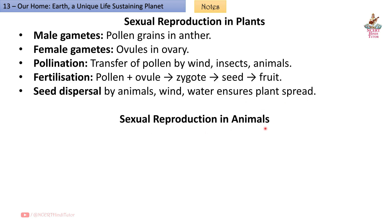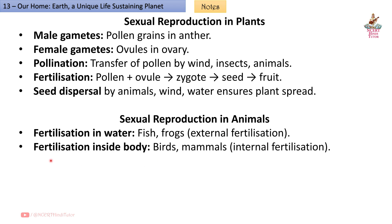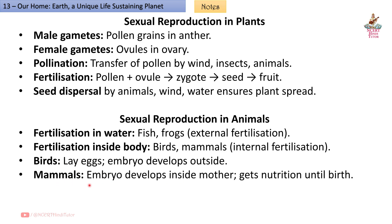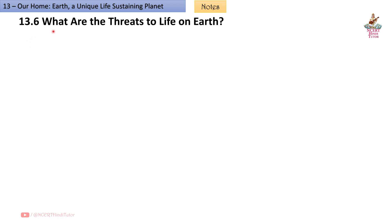Sexual reproduction in animals: Fertilization in water (fish, frogs) is external fertilization. Fertilization inside the body (birds, mammals) is internal fertilization. Birds lay eggs and the embryo develops outside. Mammals: embryo develops inside mother and gets nutrition until birth.